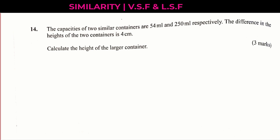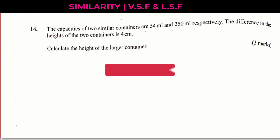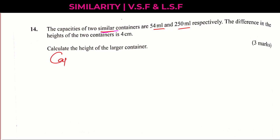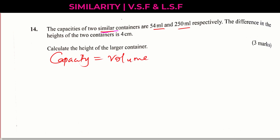We're going to begin by noting what you're already given here. You're given the capacities of similar containers. The moment you notice that you're talking about similar containers, you should always think of similarity. When you are solving questions on similarity and you're given capacity, you should notice that capacity is the same as volume. So these two will give us the volume scale factor — the ratio of volumes of two similar containers. In this case, you have the larger container which has a capacity of 250 ml.